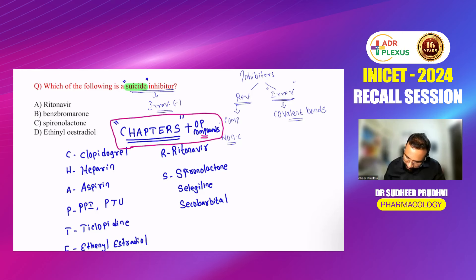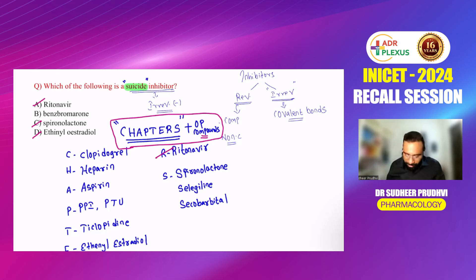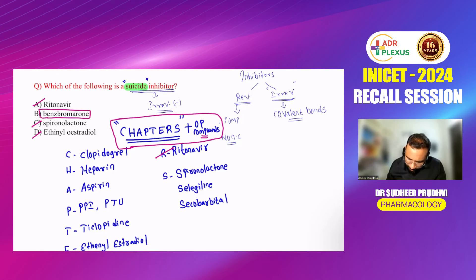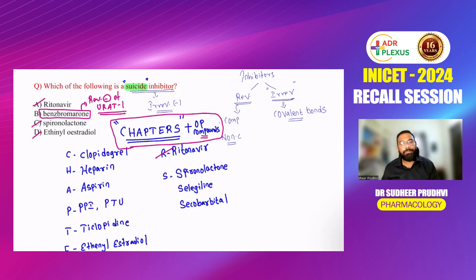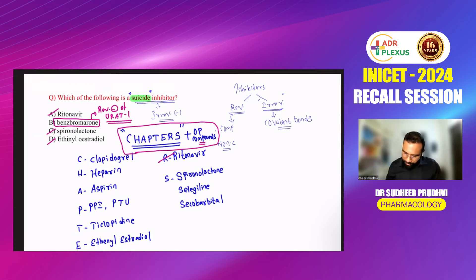From the options: ritonavir is a suicide inhibitor, spironolactone is a suicide inhibitor, and ethinyl estradiol is also a suicide inhibitor. Benzbromarone is different — it is a reversible inhibitor of urate transporter 1, used in the treatment of gout. So benzbromarone is the odd one out.